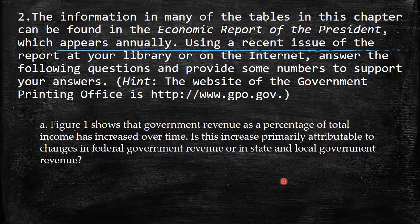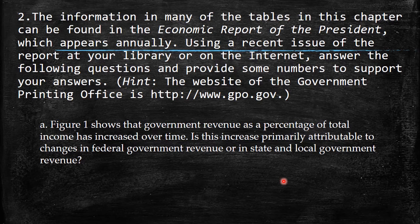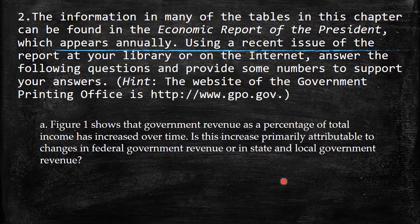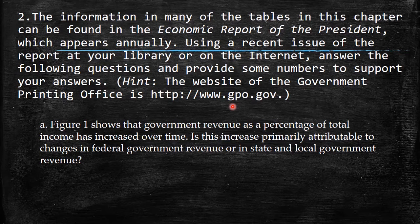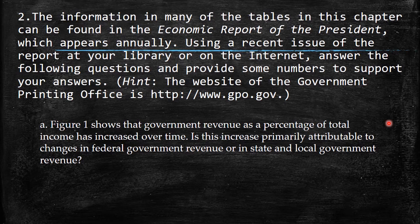The second point says the information in many of the tables in this chapter can be found in the Economic Report of the President, which appears annually. Using a recent issue at your library or on the internet, answer the following questions and provide numbers to support your answers. They also provide another website. The first sub-question — which we can take from the chapter itself — is about figure one, which shows that government revenue as a percentage of national income has increased over time.